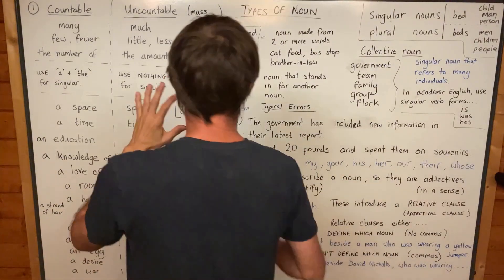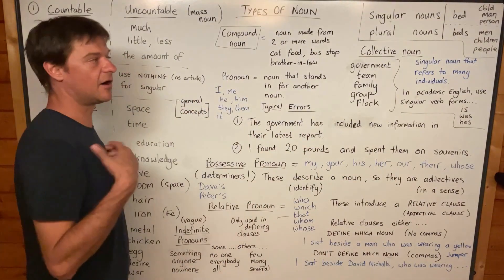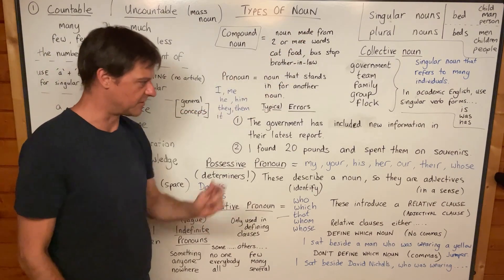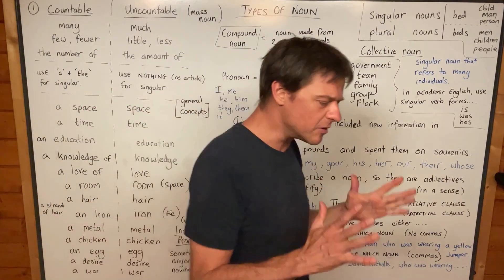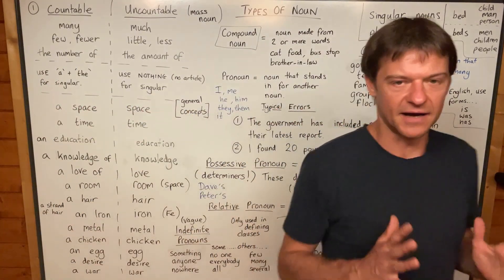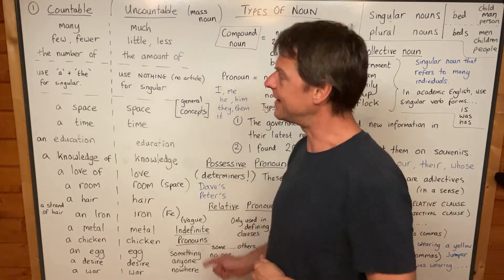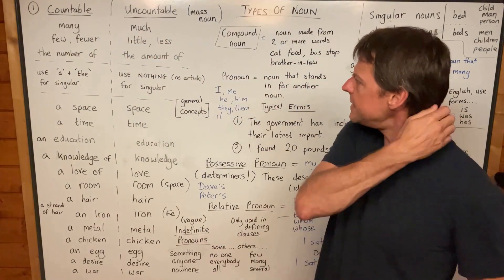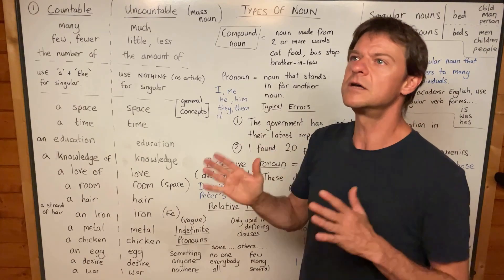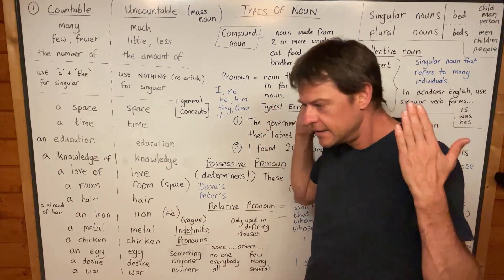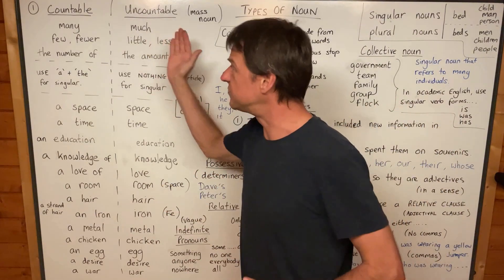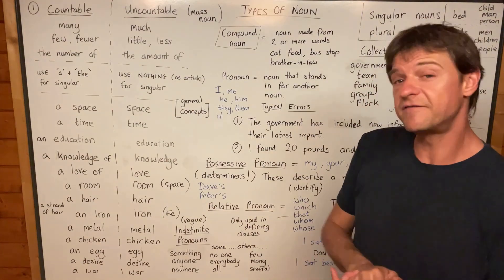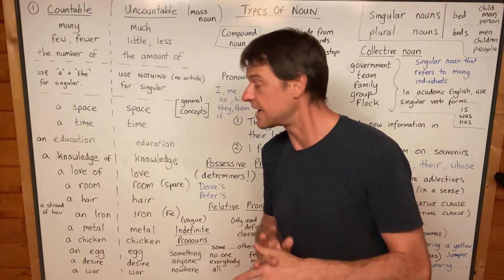Now we're going to look at some of the vocabulary that I will be using when I talk about nouns on this course. The most important thing to understand about nouns is that they can be countable or uncountable. A lot of people don't pay particular attention to this idea, this fact — and that's why they find articles very difficult.